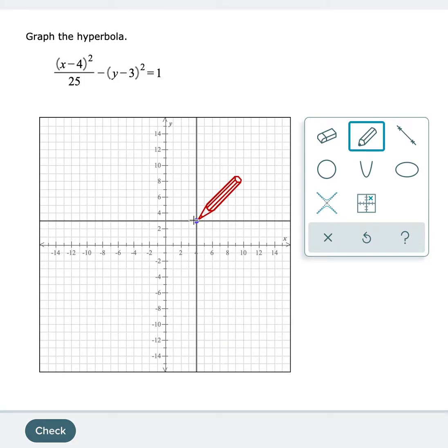The next thing I want to place is the vertex. Remember, that's our a value. a is always the first term, so I have to take the square root of this number, which is 5.